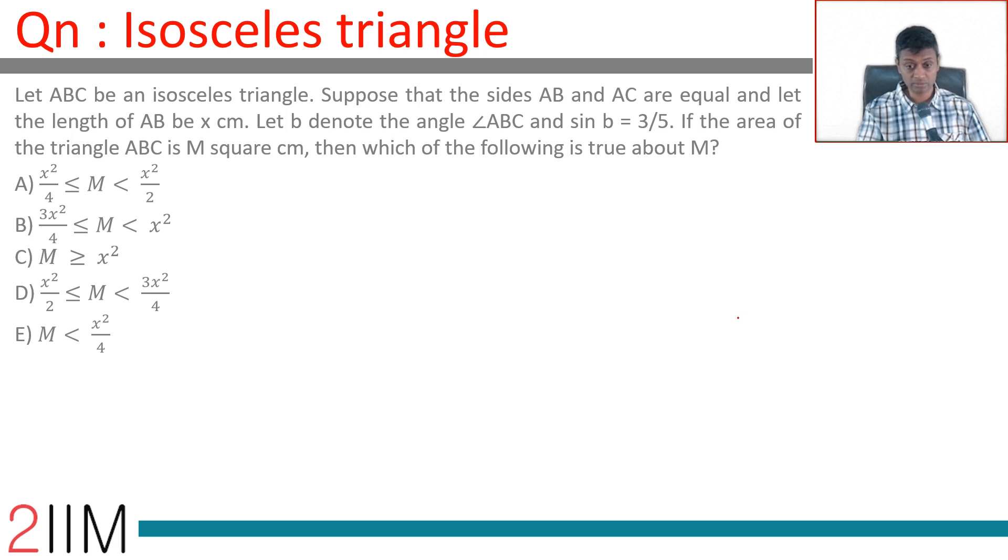Let ABC be an isosceles triangle. Suppose AB and AC are equal, let the length of AB be X centimeters. AB and AC are equal A.